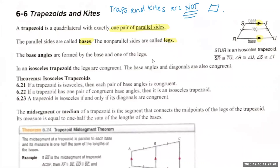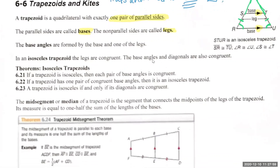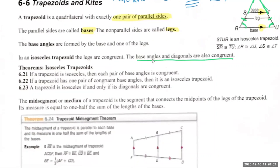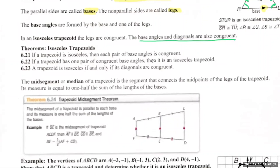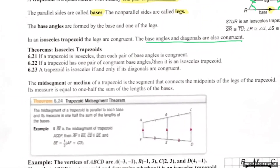Since we already have in mind the base angles of an isosceles triangle, it's easy to picture a triangle being formed if I just extend those legs out further. So if I have an isosceles trapezoid where the legs are congruent to each other, then the base angles — the angles formed by those legs — are congruent to each other as well. Base angles and diagonals are also congruent in an isosceles trapezoid, but only if the two legs are congruent.